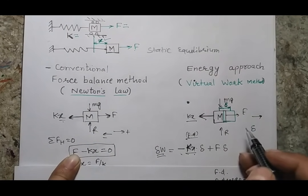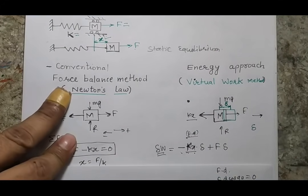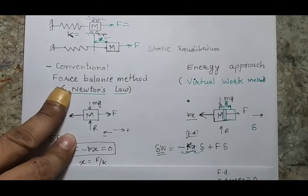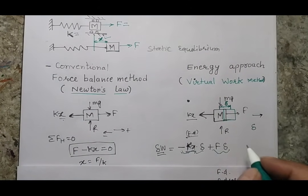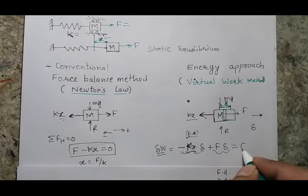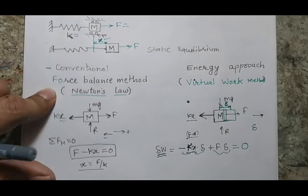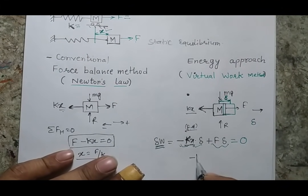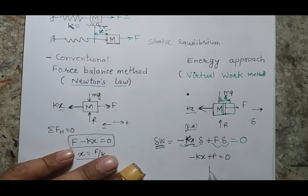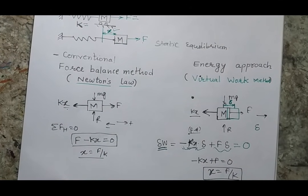Finally the equation has two work done terms: the work done by the spring force and the work done by the external force. Since this is virtual work and the system is not actually displacing, the total virtual work done is set equal to zero. This is the philosophy of the principle of virtual work. Solving this equation — taking delta common — gives minus kx plus F equals zero, and ultimately x equals F over k, which matches the Newton's law result.